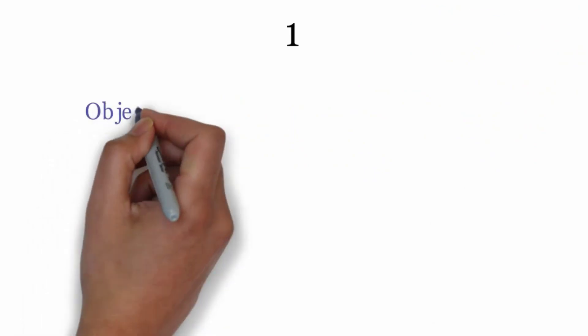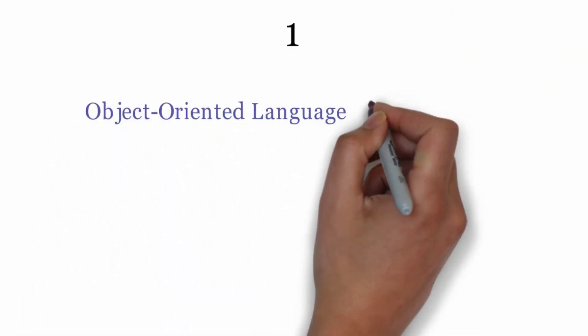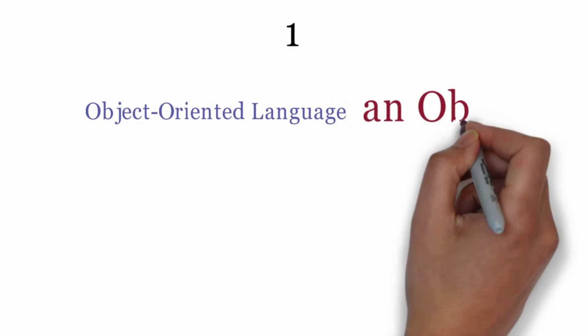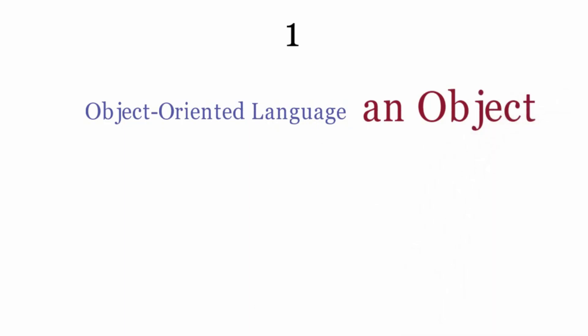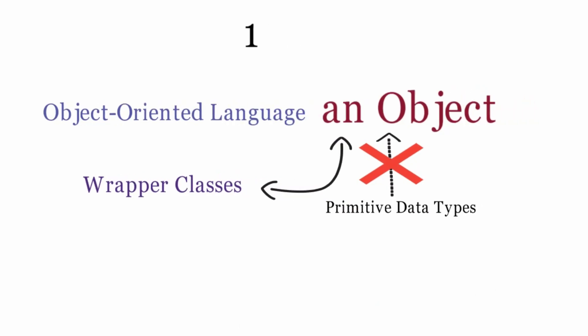First reason is: Java is an object-oriented language and everything needs to be represented as an object. However, primitive data types are not objects. Hence, wrapper classes allow us to treat primitive data types as an object.